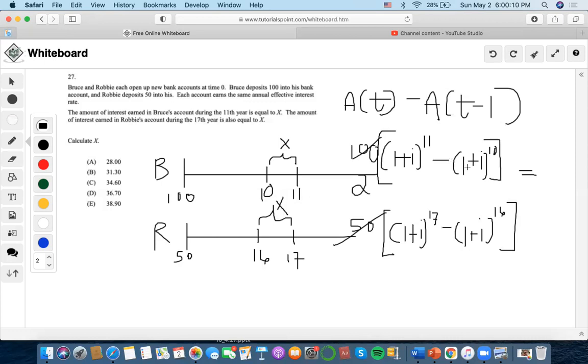We can also factor out the effective interest rates. For Bruce's equation, we take out (1+i)^10, which simplifies to (1+i) minus 1. For Robbie's equation, we do the same thing and take out (1+i)^16, which simplifies to (1+i) minus 1.